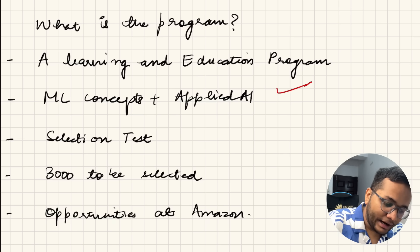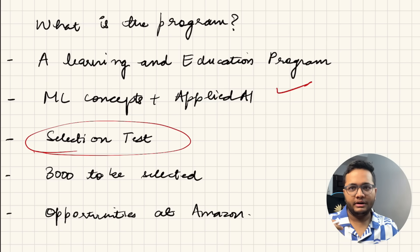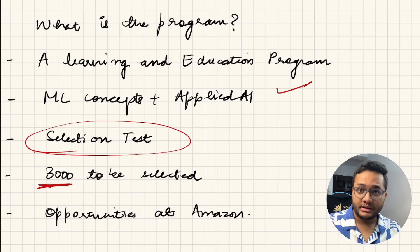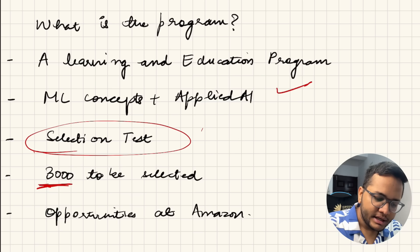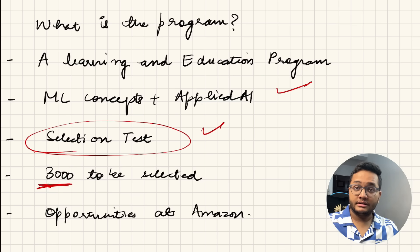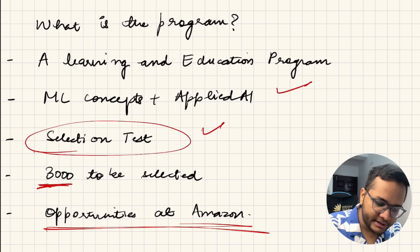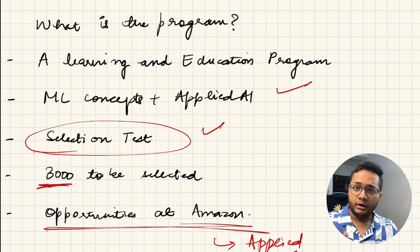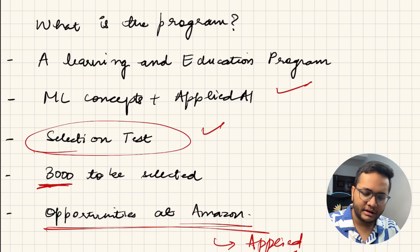For this, there's a selection test. Because when it comes to India, so many of you would be applying, so they need to have a bar. They are selecting around 3,000 students this time - this is a big number and you have a very high probability of getting selected. So please do apply for it. You can get opportunities at Amazon for the role of applied scientist. Applied scientist is basically more around a research role. It offers around 51-52 lakhs per annum - that's the salary of an applied scientist fresher when they join Amazon.